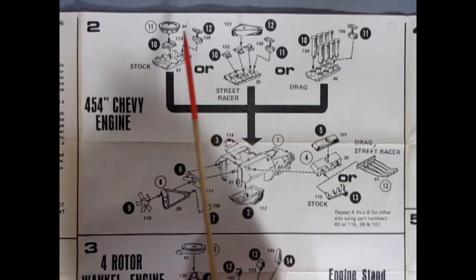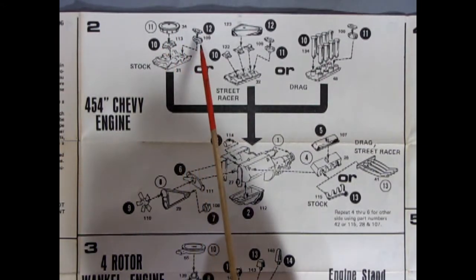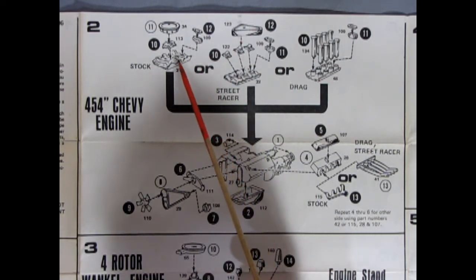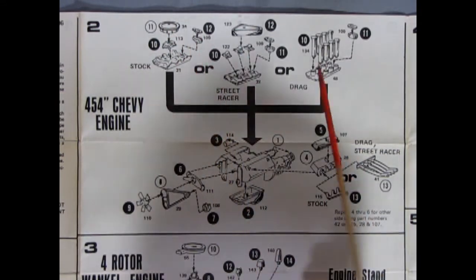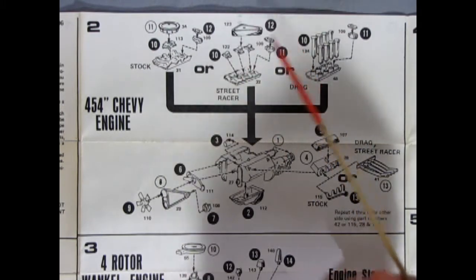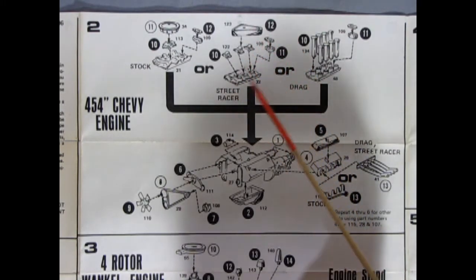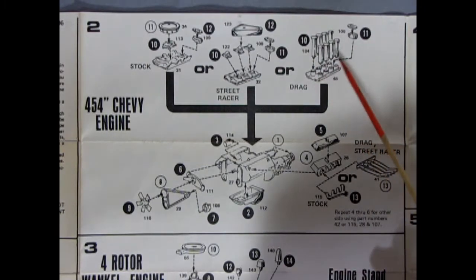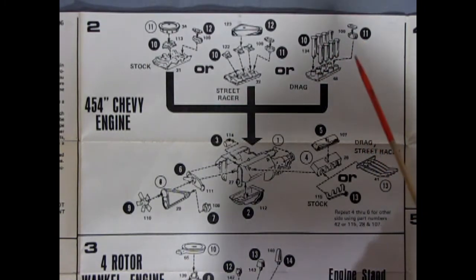Now we do have our stock air cleaner, our four barrel carburetor, and our distributor in two pieces because it's shielded, being on a fiberglass car. Then our intake manifold for the stock. Our street racer has the tricarbs and the triangular air cleaner, which was more of a late 60s, early 70s style setup. And then we've got this nice drag racing one with velocity stacks going into the special manifold.